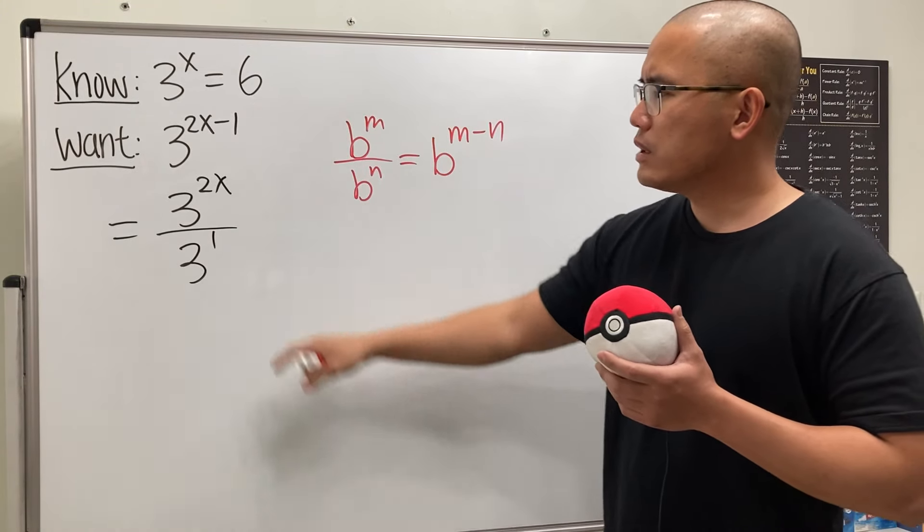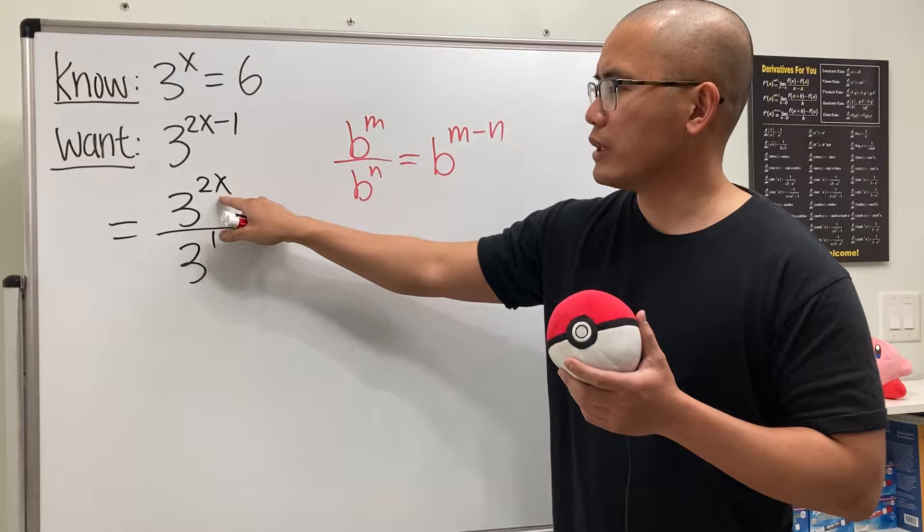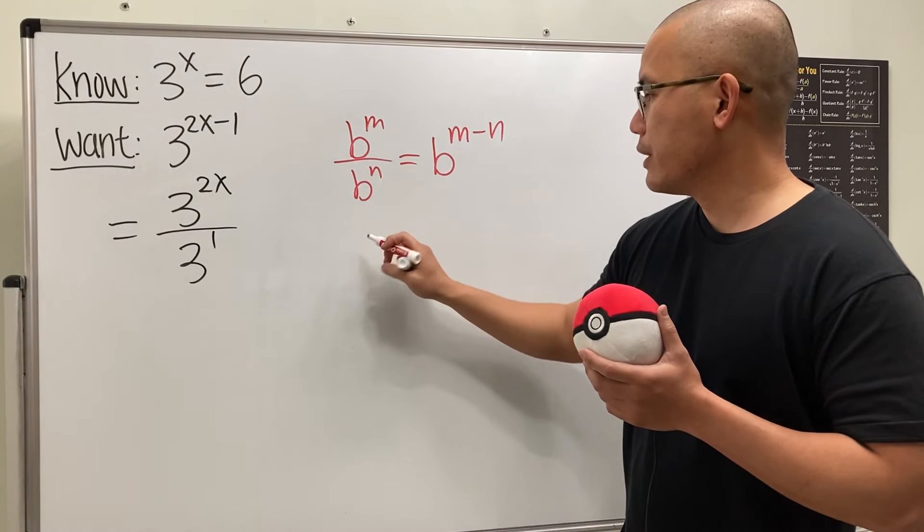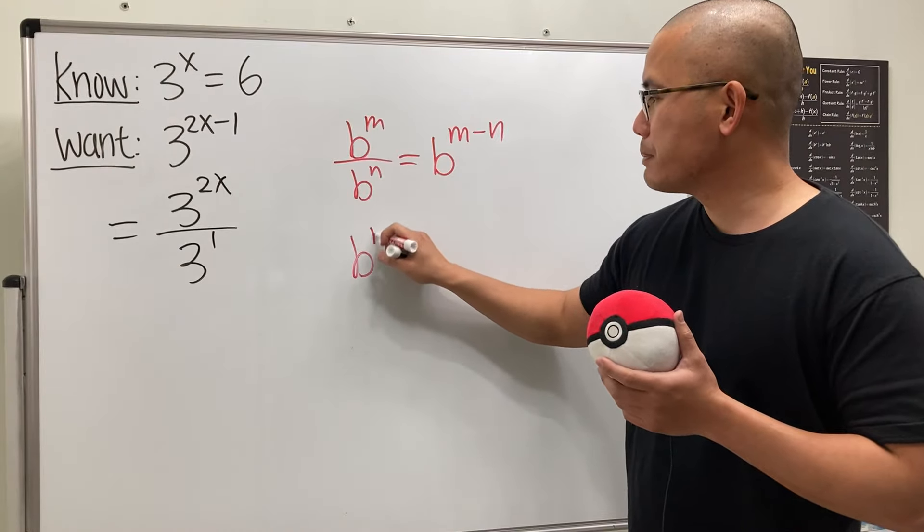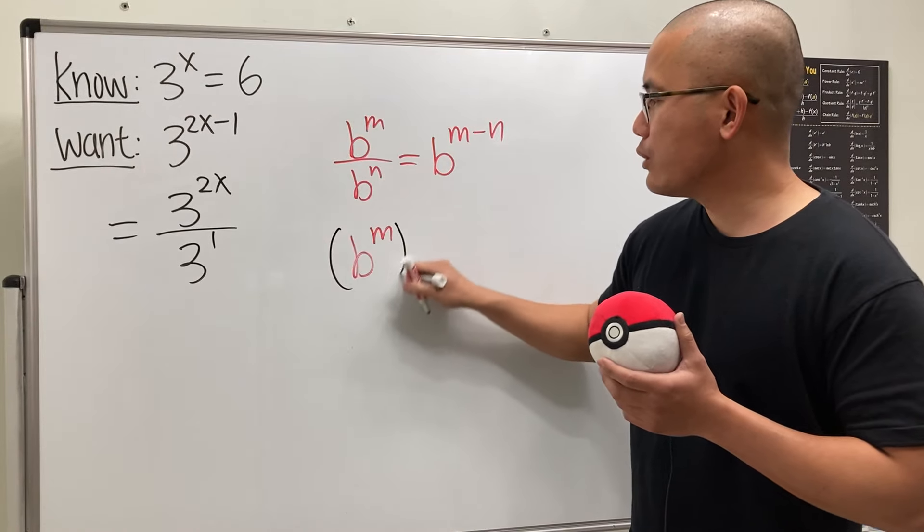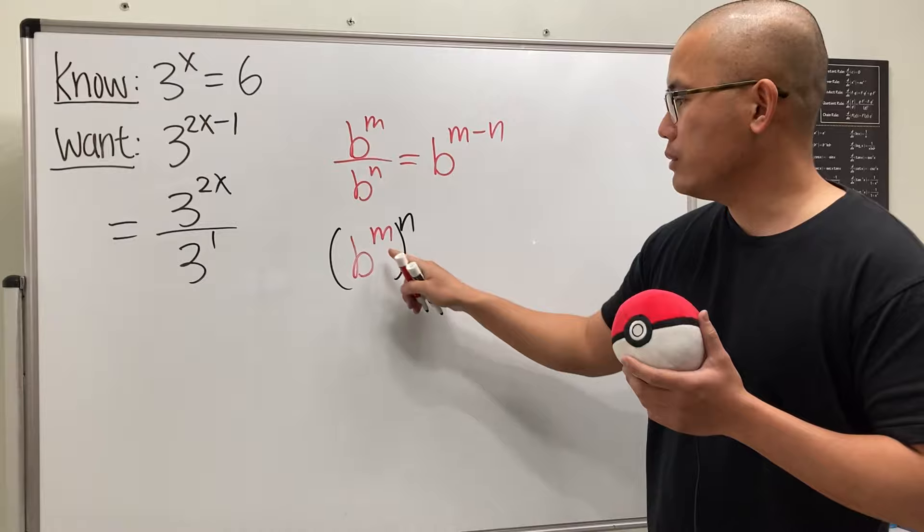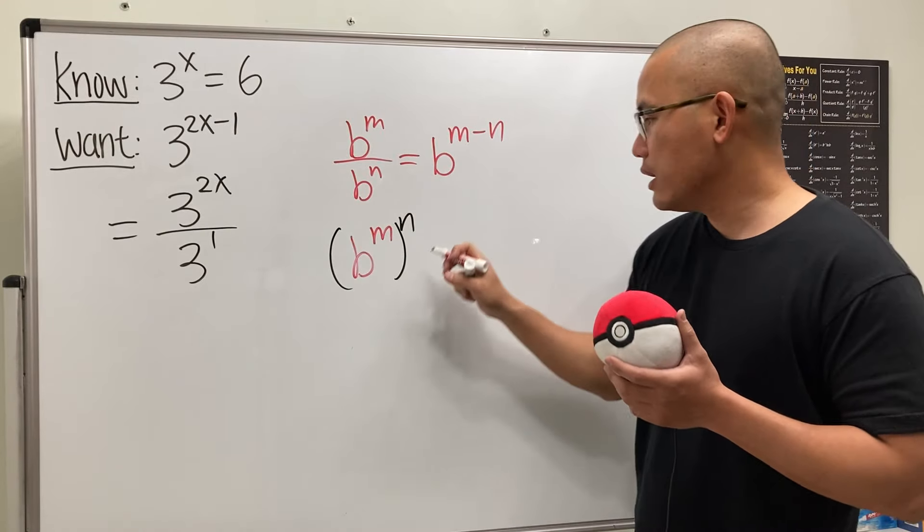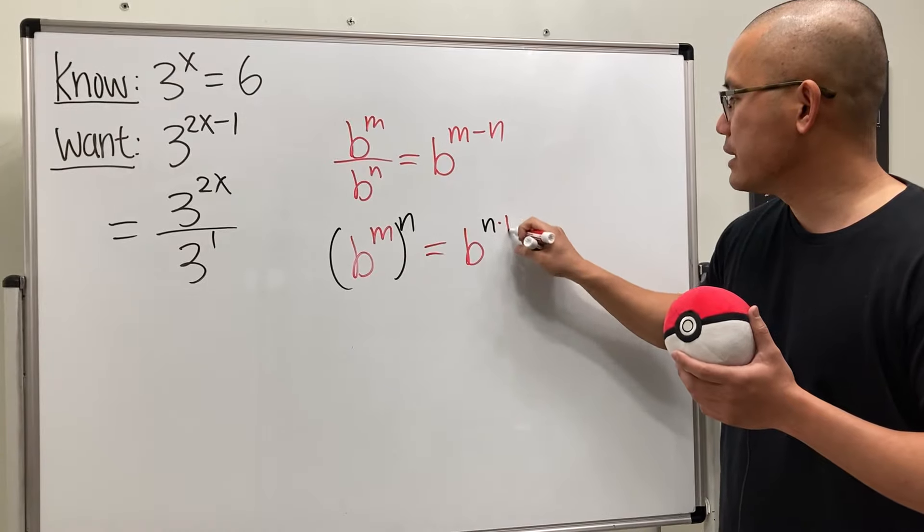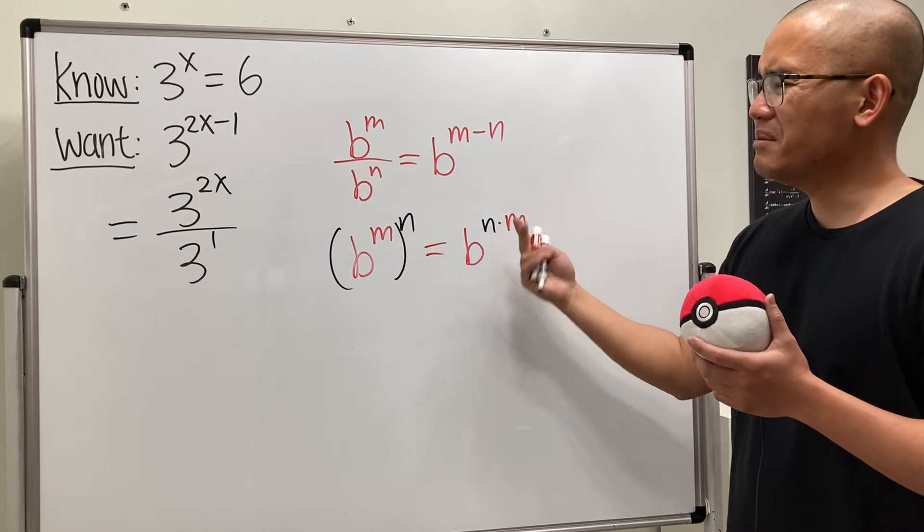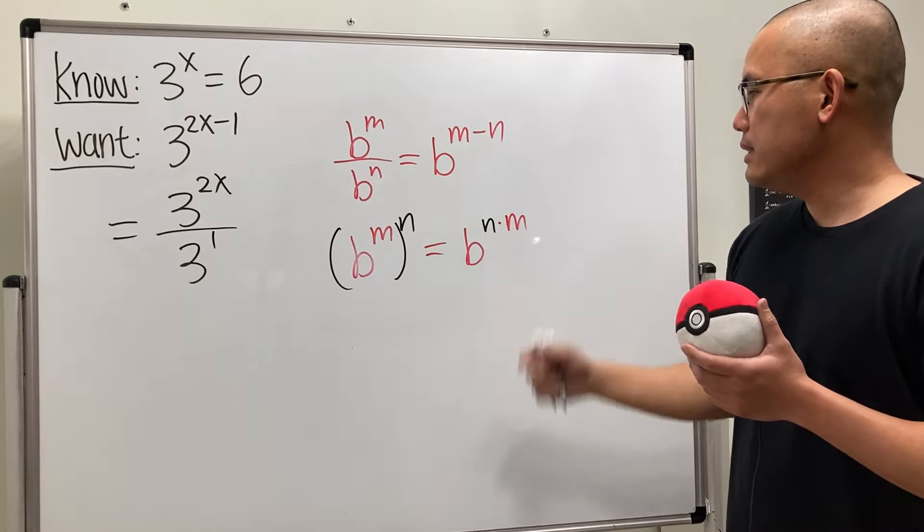And then, we see that this right here, we have 3 to the 2 times x power. So, here's the other formula. When we have b to the m's power, and then if we raise that to the n's power, well, we can just multiply the exponents. So, this right here becomes b to the n times m, or m times n. It doesn't matter.